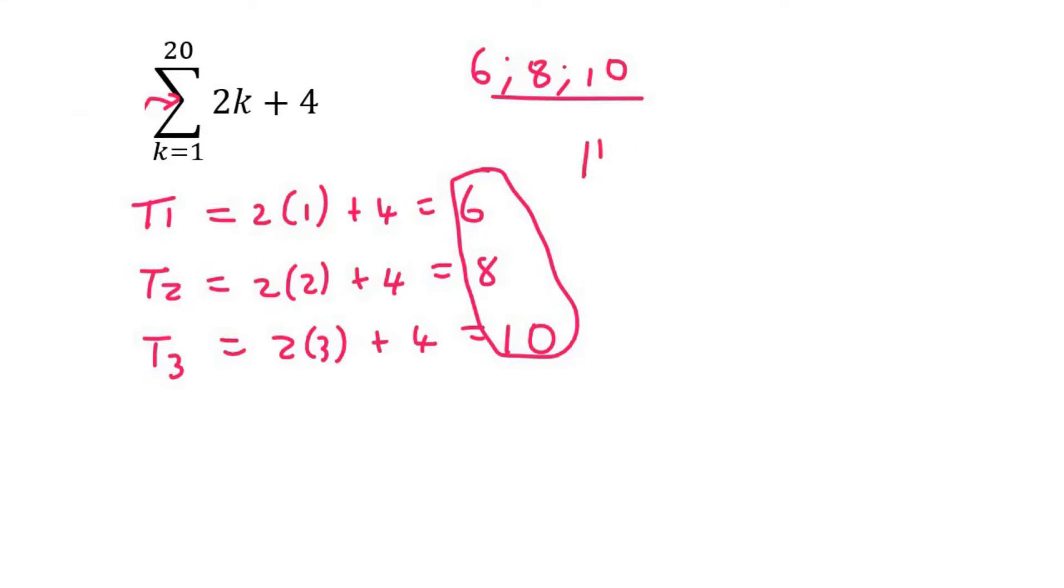To find the number of terms, please don't just always look at that number, because once again when they change this number at the bottom, then all of that changes. So what you do instead is you take the top number minus the bottom number and then you plus one.